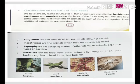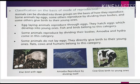Now come to the next category — classification of animals on the basis of reproduction. Animals can be divided into three groups based on how they reproduce. Some animals lay eggs, some reproduce by dividing their bodies, and some others give birth to their young ones. Egg-laying animals reproduce through eggs — they hatch eggs which develop into young ones. Fishes and birds belong to this category.